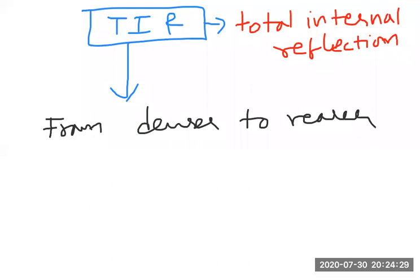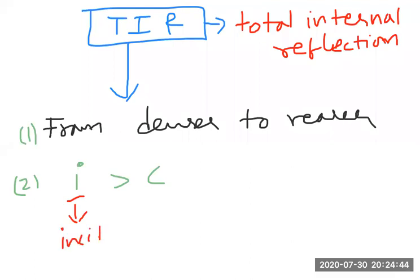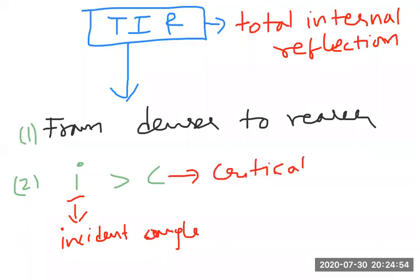The second condition is that the angle of incidence must be greater than the critical angle. When the incident angle is greater than the critical angle, Total Internal Reflection takes place.